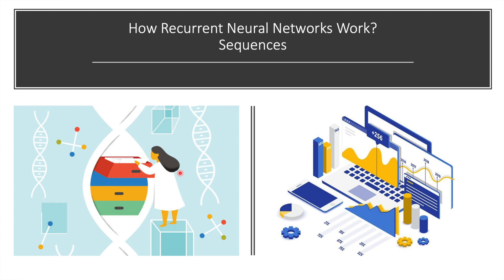So the next question is how recurrent neural networks actually work. To understand RNNs properly, you need to understand the normal feed-forward neural network and sequential data. Sequential data is basically just ordered data in which related things follow one another — examples are financial data or DNA sequences. The most popular type of sequential data is perhaps time series data, which is a series of data points listed in time order.